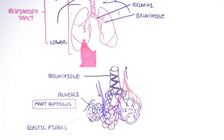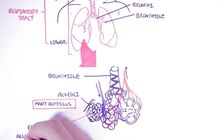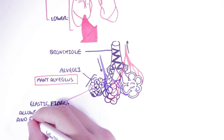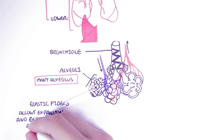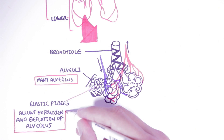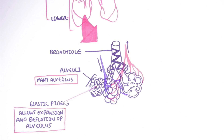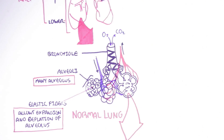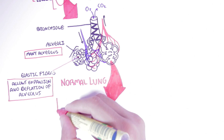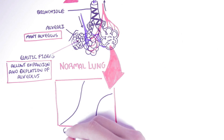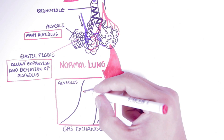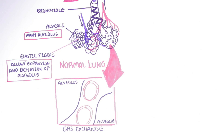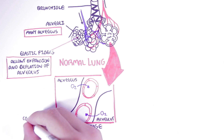The elastic fibers allow the alveolus to expand when receiving oxygen and then to deflate when exhaling CO2. The same applies to the bronchiole. Oxygen and CO2 are exchanged essentially within the alveoli. More specifically, gas exchange occurs between each alveolus and the capillary — oxygen is exchanged for CO2 in the alveolus.